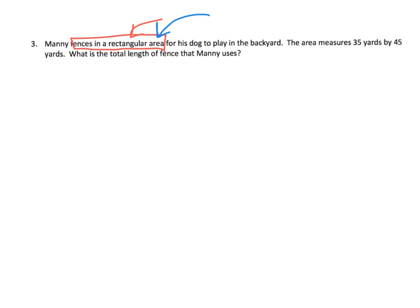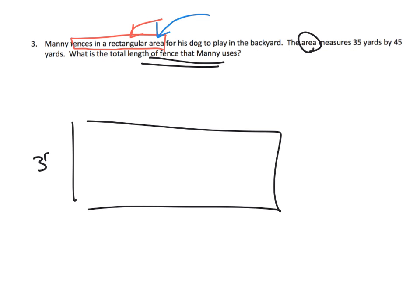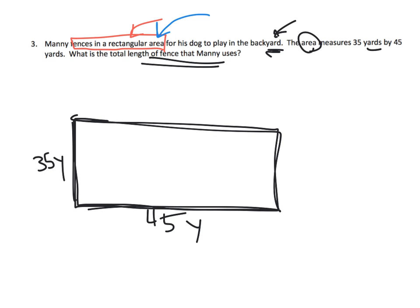The area measures thirty-five yards by forty-five yards. What is the total length of fence Manny uses? It's tricky — you can't just use that word. So we draw a yard: thirty-five yards and forty-five yards. Notice the word 'backyard' and then the word 'yard' — the words are so important in mathematics.